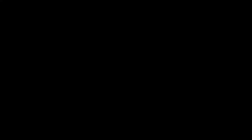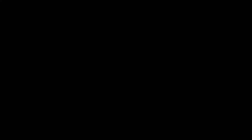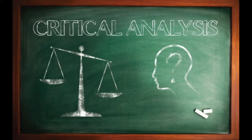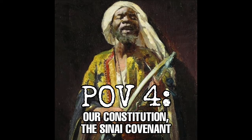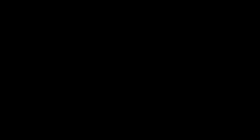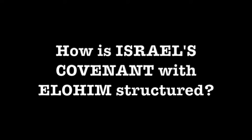The general purpose of a POV is to offer a first-person point of view as I critically read the text. Together we can identify important scriptural concepts in the passage and view them from different angles to get a deeper understanding of what we've read. Today's POV 4 will be helpful for answering these questions: What is a covenant? How is Israel's covenant with Elohim structured?